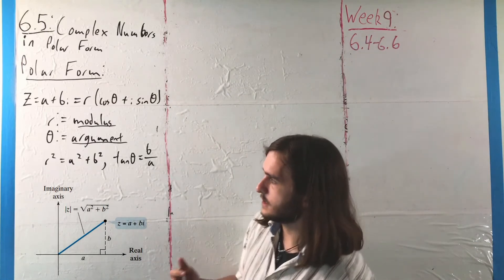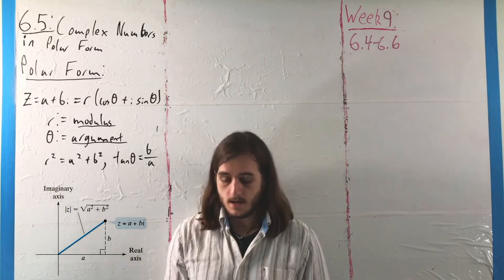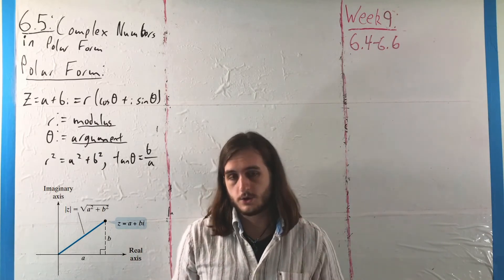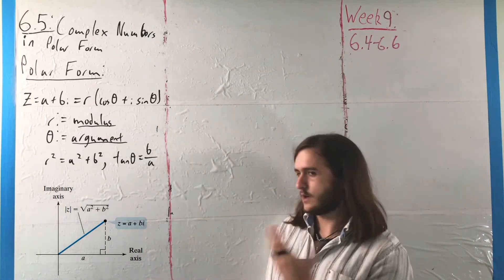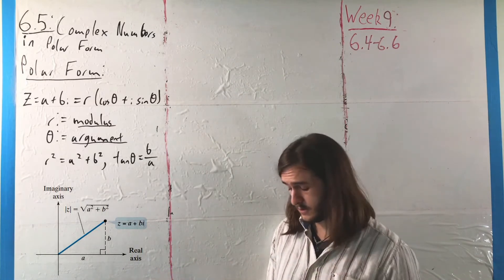We call the value r the modulus, and θ is our argument, where we want θ to be between 0 and 2π as we talked about in earlier chapters.